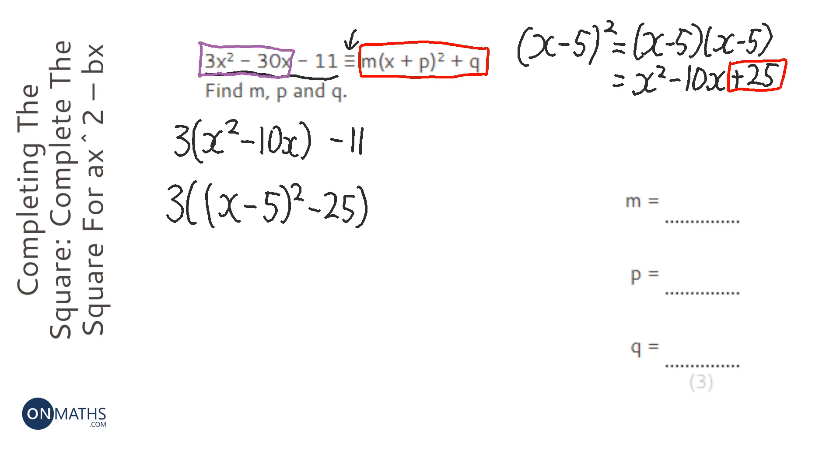The rest of it's great, the x squared minus 10x, fantastic. But that 25 we need to get rid of. And then we've got that minus 11 that just kind of hangs on at the end.